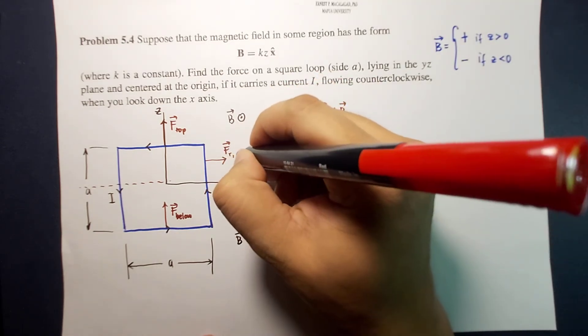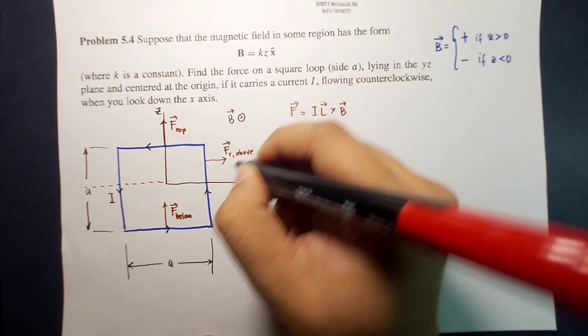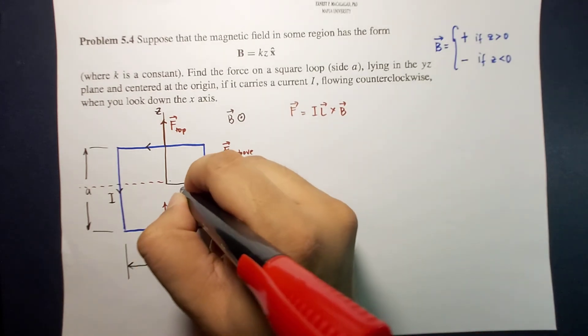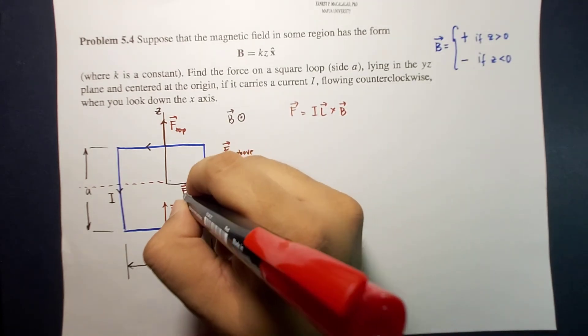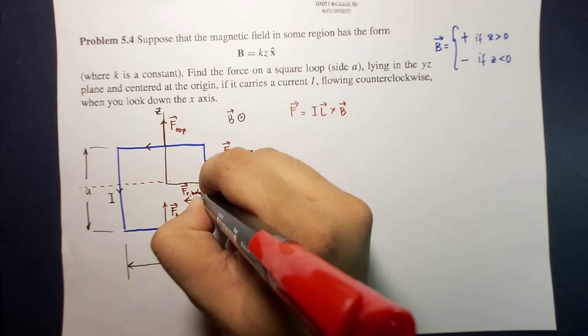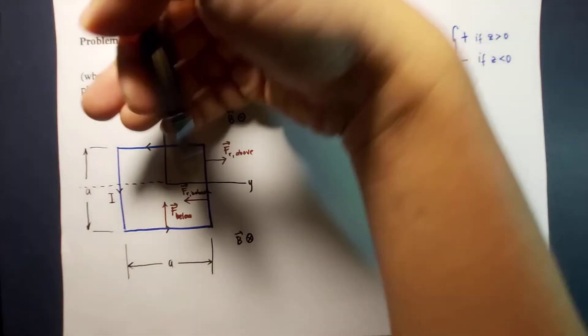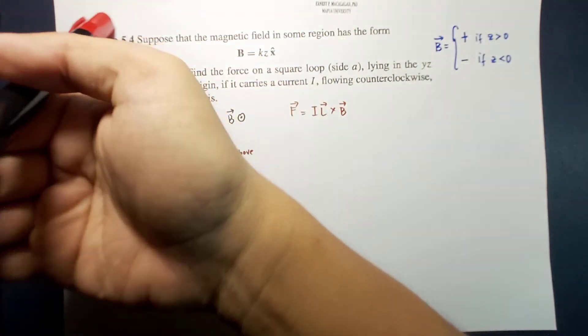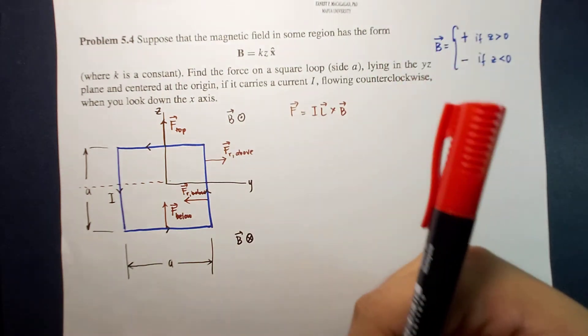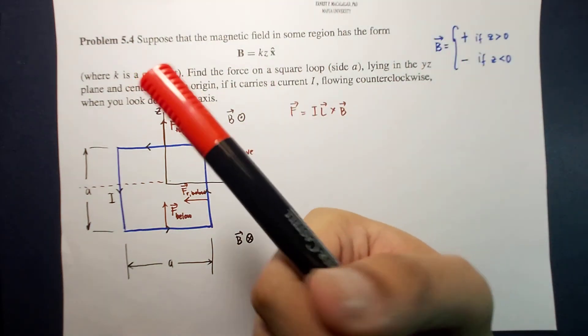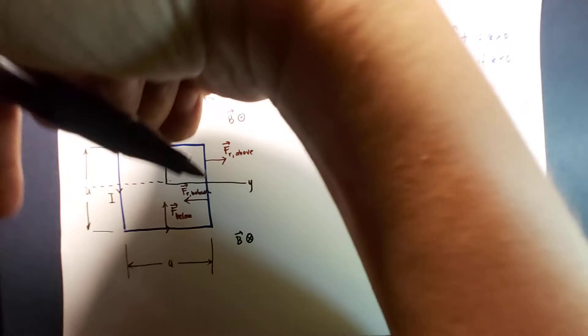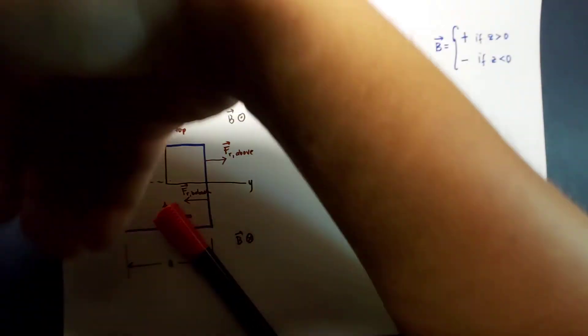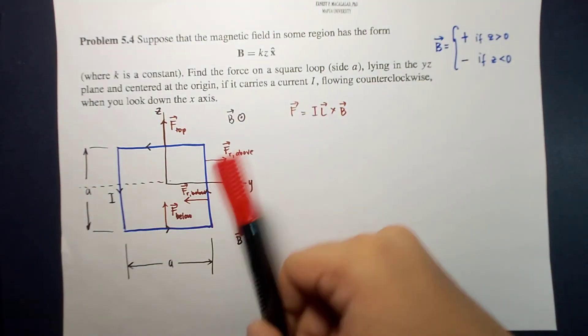However below, the direction is different. So this is right but below. Below in this case also, so I cross B, the direction is...